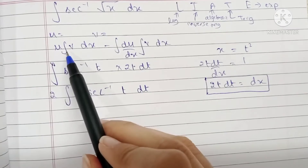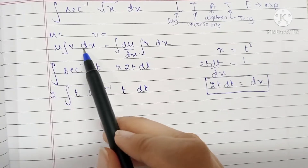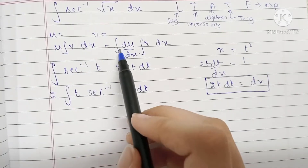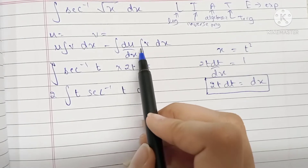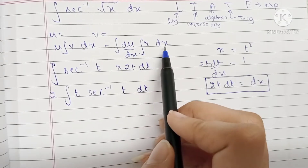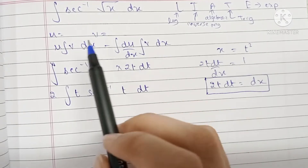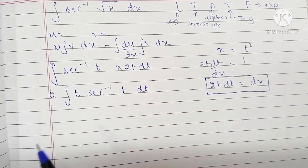Now we're going to use the integration by parts formula, for which we'll use the LIATE rule. The by-parts formula is: u times the integral of v dx, minus the integral of (derivative of u) times (integral of v dx), where u and v are the two terms of the integral.